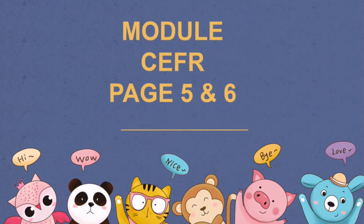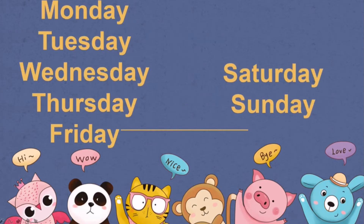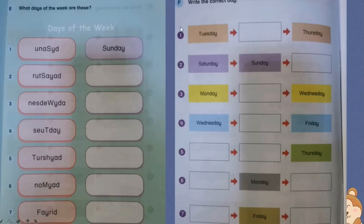Take out your module CEFR book — your orange book — turn to page five and six. You're going to do this activity: 'What days of the week are these?' For example, these are misspelled words and you need to rearrange them into the correct spelling, like Sunday. Find them yourself based on this.